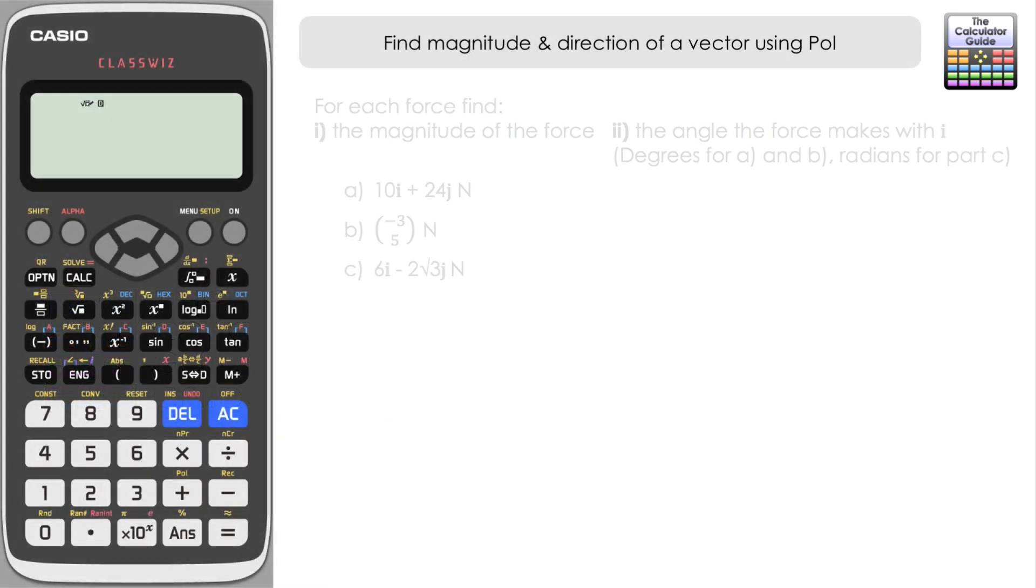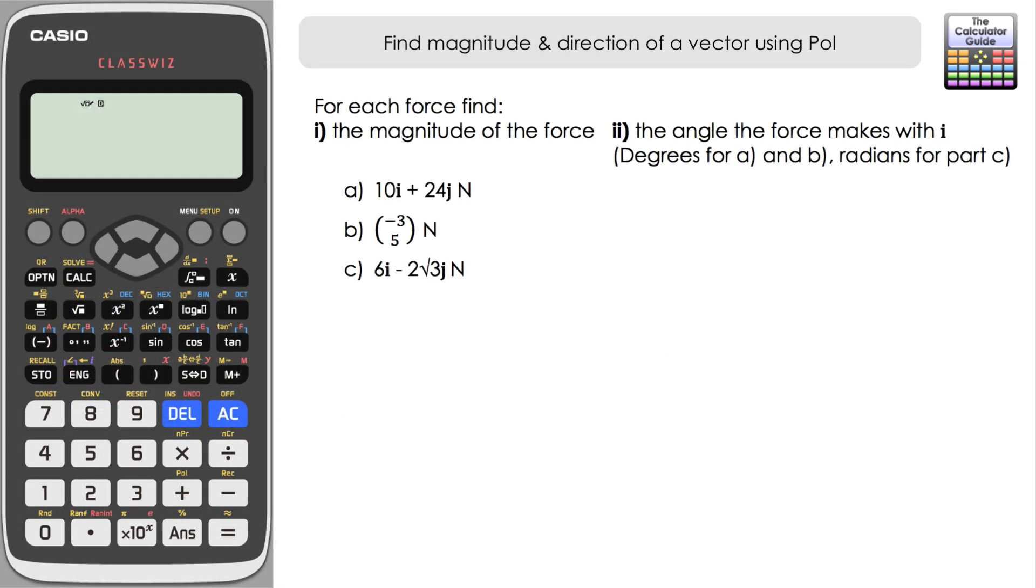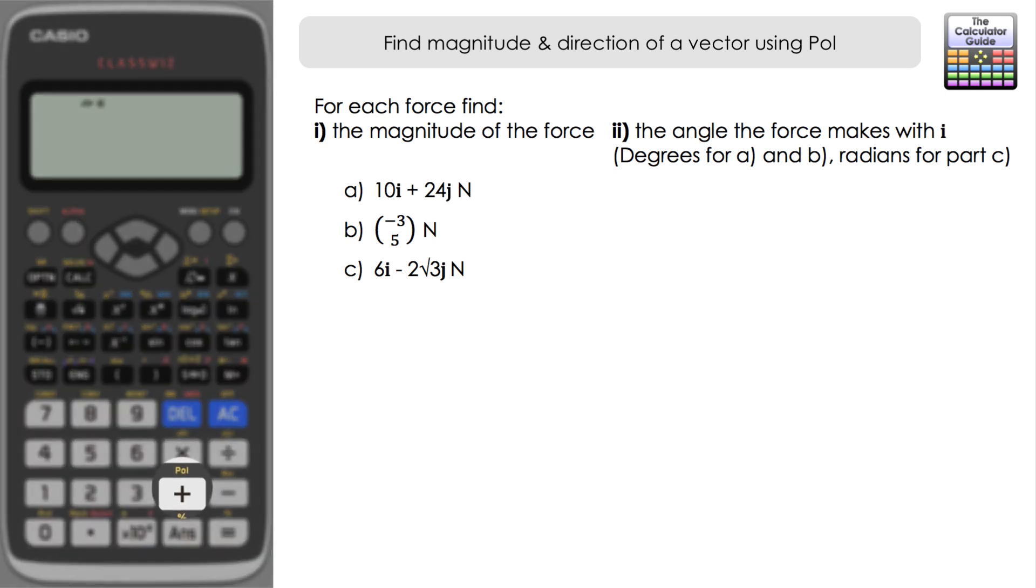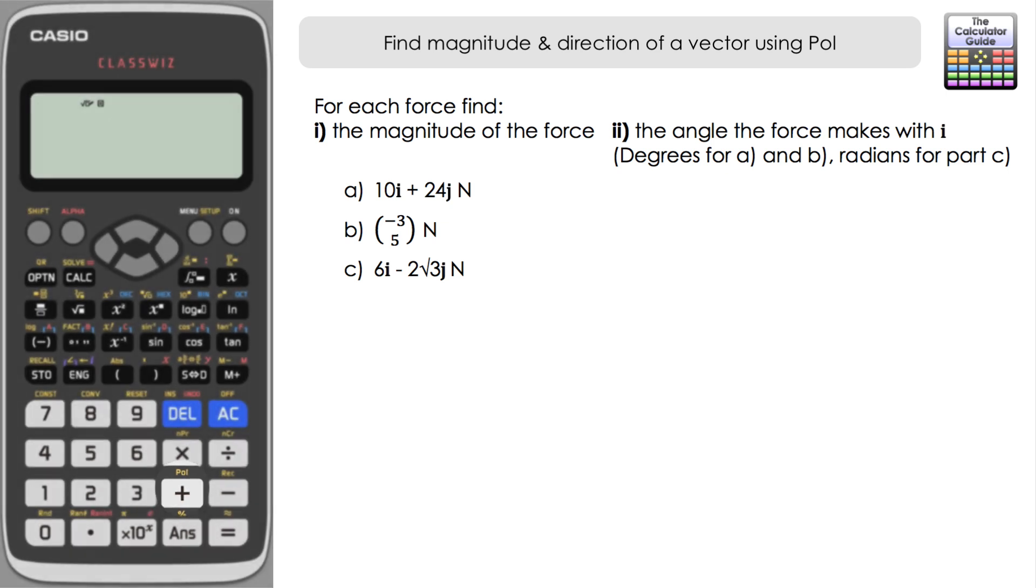I'm completing this on a Casio FX991EX but you can do it on any calculator that has this polar coordinates feature. It's located just above the plus sign. This would typically be used to convert Cartesian coordinates to polar coordinates, and of course you can use it for that if polar coordinates are part of your studies.